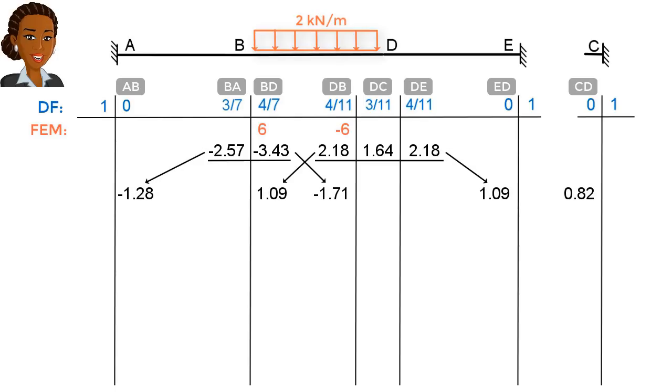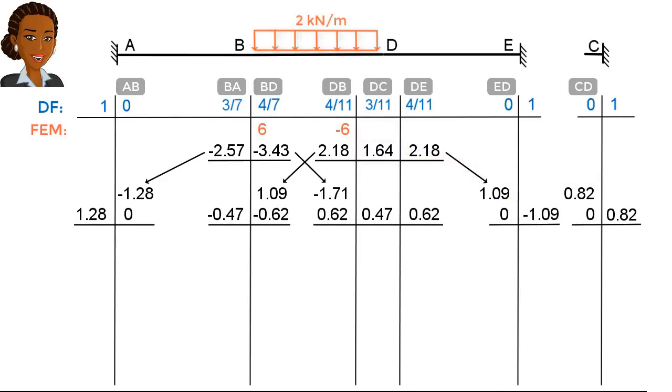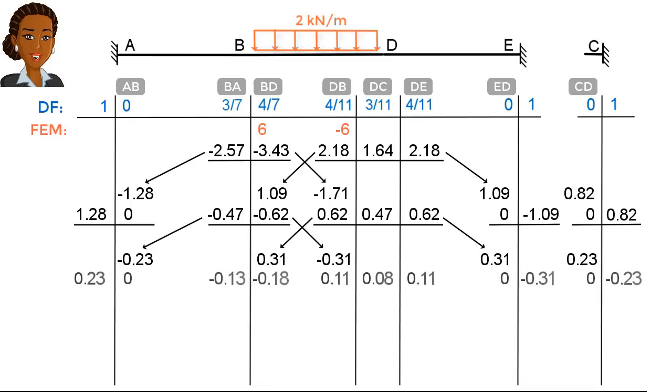Note that for joint D, we carried half of this balancing moment to this column. We balance the joints again, then add the carryover moments to the table. We continue this process until the moment values become negligible.